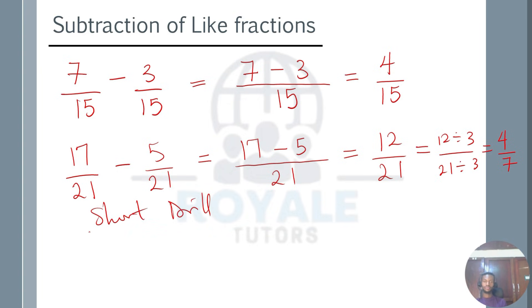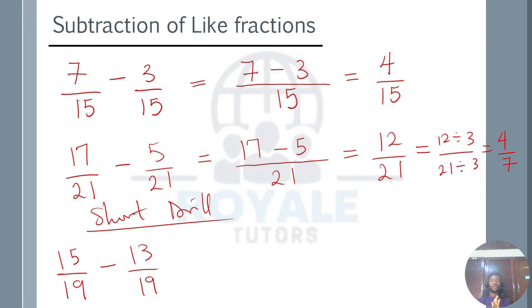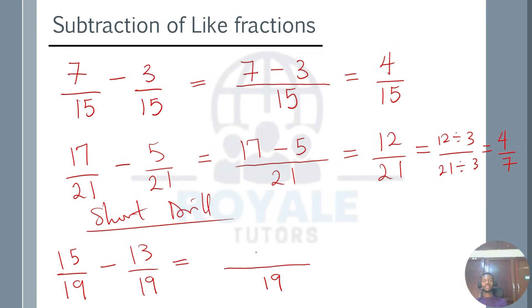Quickly take this short drill: What is 15 over 19 minus 13 over 19? These are like fractions. Pause the video and practice the subtraction. The denominator remains the same — 19 — and we deal with the numerator alone: 15 take away 13 gives us 2. So the answer is 2 over 19.